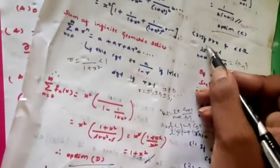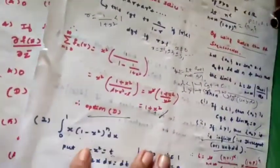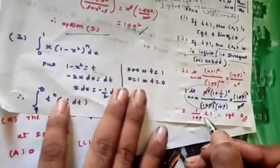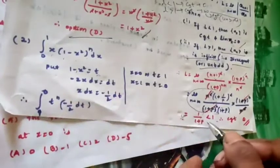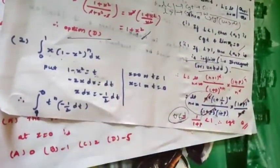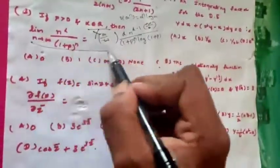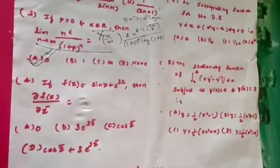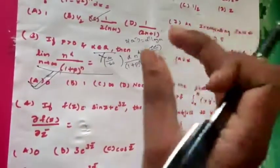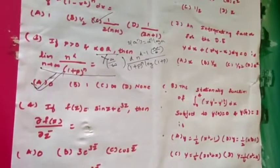Taking p values 1, 2, 3, and so on, we always get a value less than 1. Even as p → ∞, 1/(1+p) → 0, which is also less than 1. Therefore the given limit converges to 0. The correct option is confirmed. This concept is very important and many exams ask questions based on it.